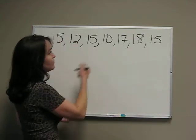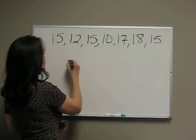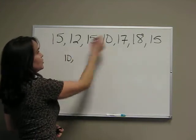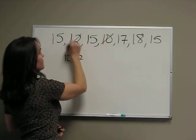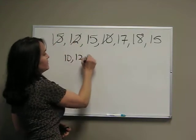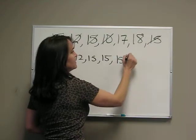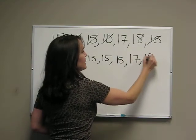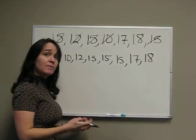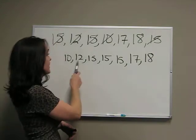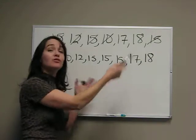So when we put this in order, start from the smallest which is 10, then 12, 15, 15, 15, 17, and 18. You can always make sure that you have all the numbers by counting, making sure that you still have seven.